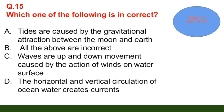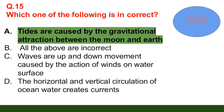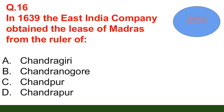Question number 15: Which one of the following is incorrect? Option A: tides are caused by the gravitational attraction between the moon and earth; option B: all of the above are incorrect; option C: waves are up and down movements caused by the action of winds on water surface; option D: the horizontal and vertical circulation of ocean water creates currents. The correct answer is option A — tides are caused by the gravitational attraction between the moon and earth.